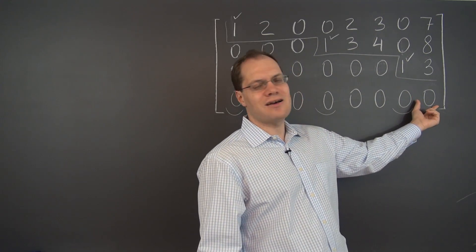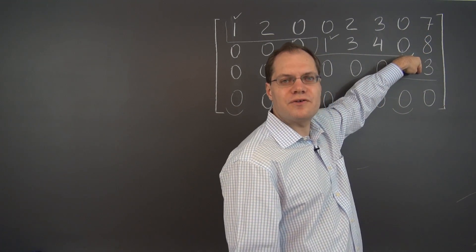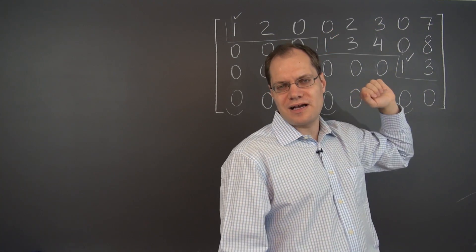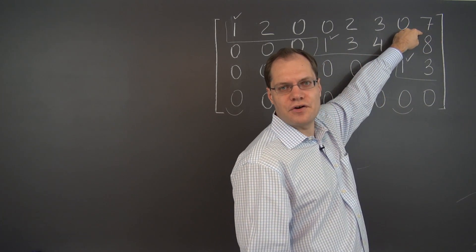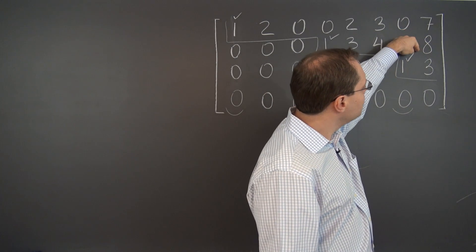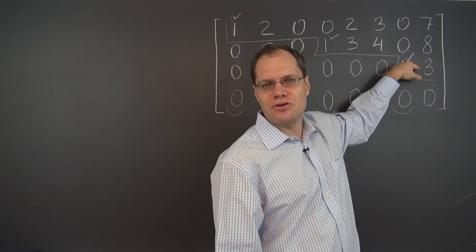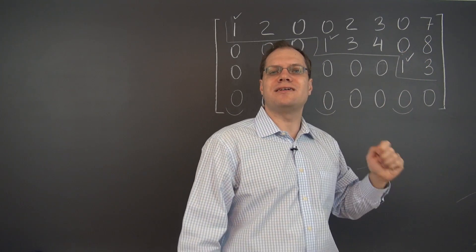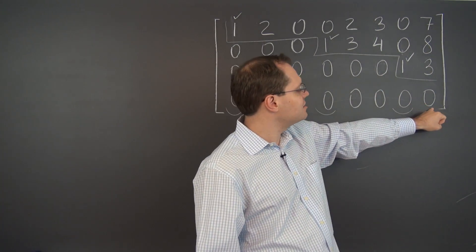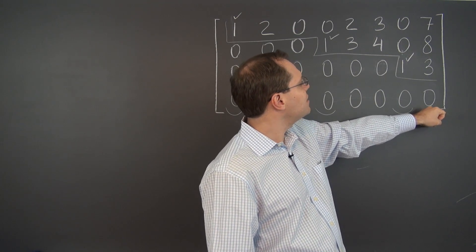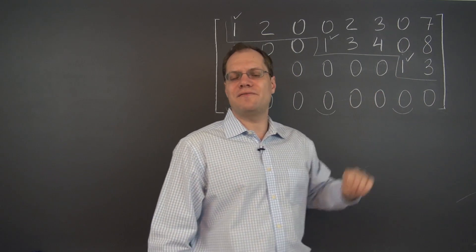For example, looking at the last column of this matrix, just by looking at the column itself, I can say that this column is seven times the first pivot column, plus eight times the second pivot column, plus three times the third pivot column. Now, to actually identify the position of the columns, we have to know where the pivot columns are, and then we'll be able to say that this column, the last one, is seven times the first column, plus eight times the fourth, plus three times the seventh column.